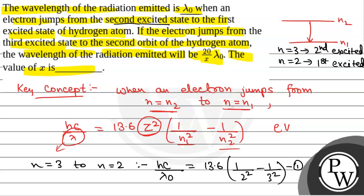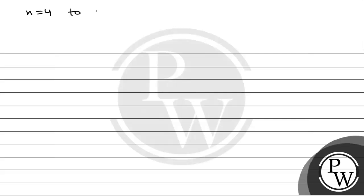Now, the electron jumps from the third excited state. Third excited state means n = 4. So, third excited state to second orbit means n = 4 to n = 2. This is the transition we need to consider.